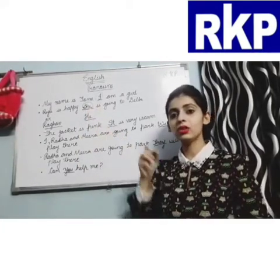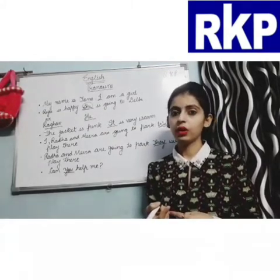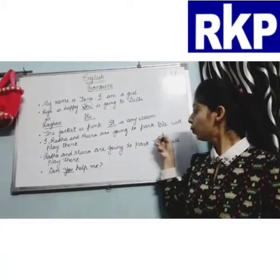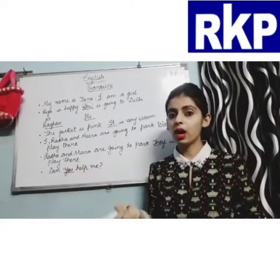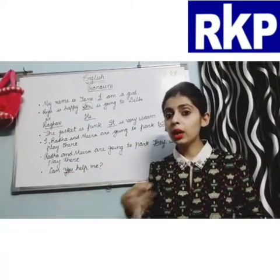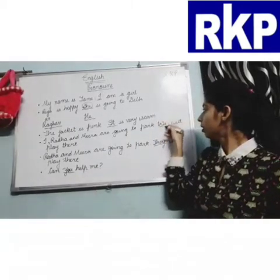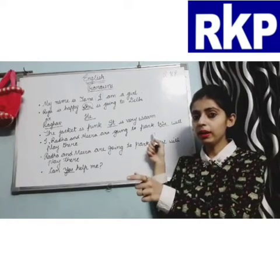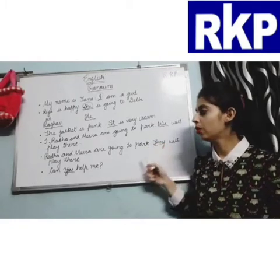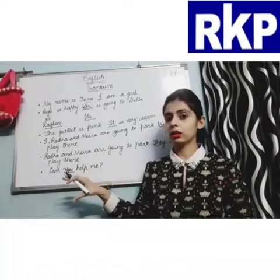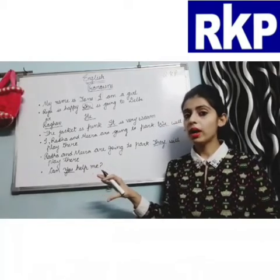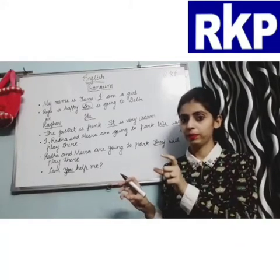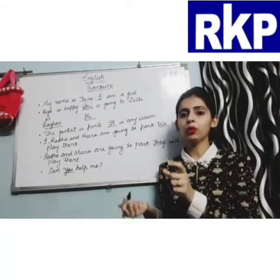We are using pronouns in these sentences to avoid repetition of nouns. For example: 'I, Radha and Meera are going to the park. We will play there.' Here 'we' is used because I am talking about many people including myself. But if only 'Radha and Meera are going to the park' and I am not there, then I say: 'They will play there.' The pronoun 'they' is used because I am not included.